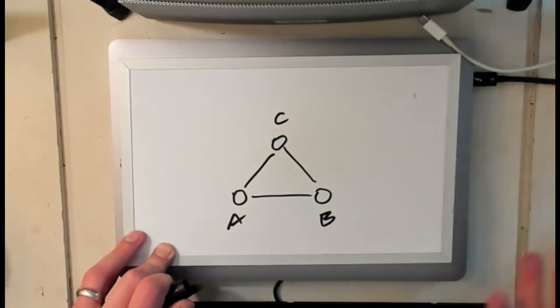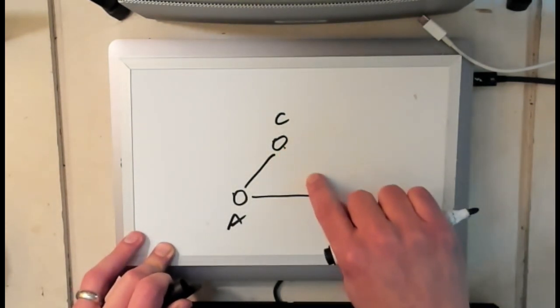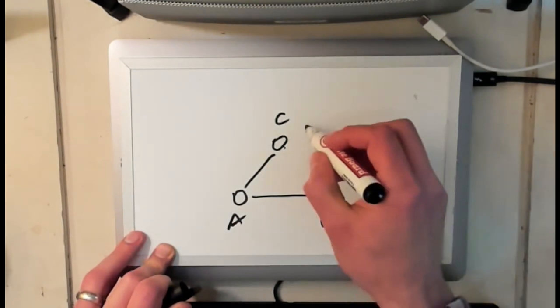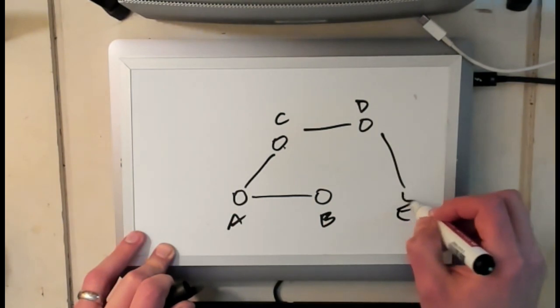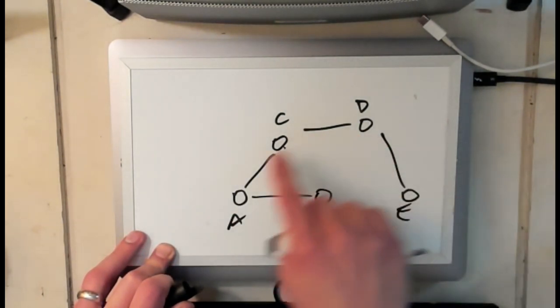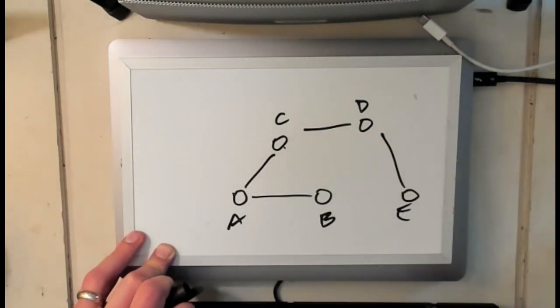Some graphs have cycles, some don't. So for example a linear graph like this does not have a cycle. No matter how many nodes I add to it, if I go off here, I'm never going to have a cycle because getting back to a node always involves some type of backtracking.